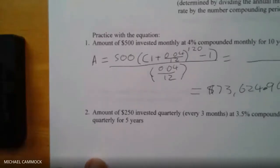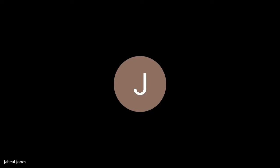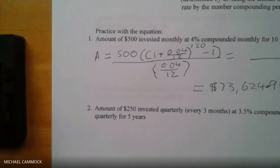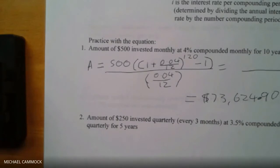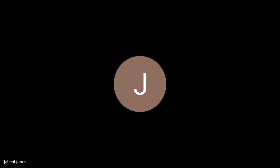The teacher explains what the answer means: if you go to the bank every month with your paycheck, take out $500 and put it in at 4% for 10 years, after 10 years you'll simply have that 73,000-plus dollars waiting for you. That's the idea of investing.